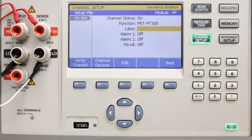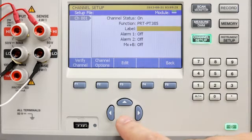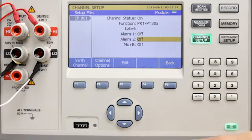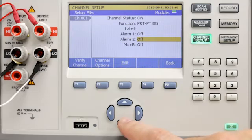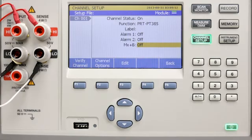We can apply a label to this channel which is recorded in the data file. You can enter a label through the navigation keys and the alphanumeric pad. You have the ability to set two alarms on each channel. These alarms indicate when either an upper or lower range has been exceeded. The alarms can output a signal from the rear panel output to an external device. And all channels have the ability to do an MX plus B, which is a gain and offset for scaling of various signals.